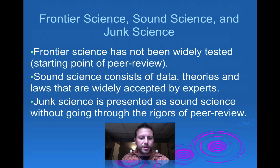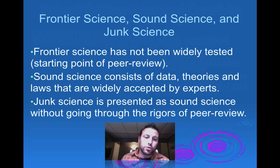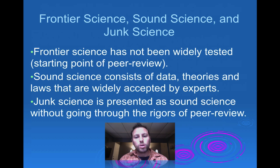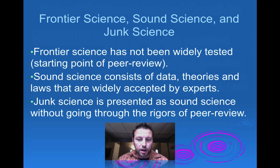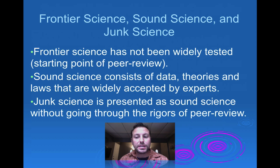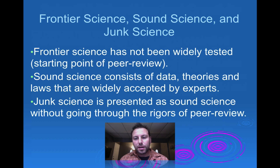Junk science is basically science that hasn't gone through any real process and no real peer review. We see this used in politics a lot, where it's put out there to help refute what's actually sound science — science that has gone through a series of experiments, been peer-reviewed, and accepted by experts. That junk science really throws a monkey wrench into sound science. Frontier science, on the other hand, has not been widely tested and is just starting the point of peer review — it's new and out there, but hasn't undergone the tests we've seen with sound science.